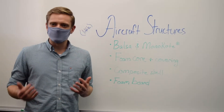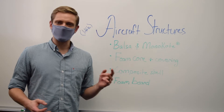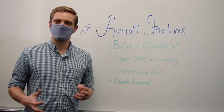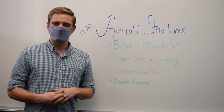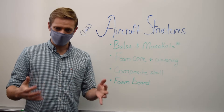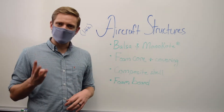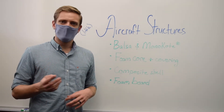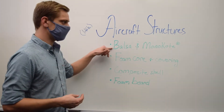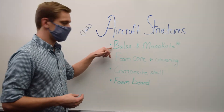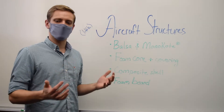The primary structures that you have to be concerned with in an RC aircraft are the wings and the fuselage. They're the ones that take up the most volume and typically take the most work and effort to build. The three main types of materials you will use to make those: you can use either balsa with balsa ribs and monoco covering.